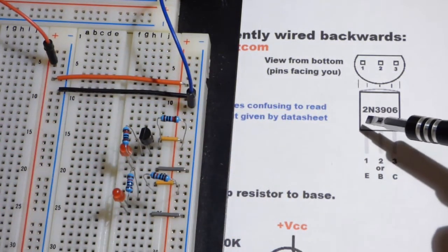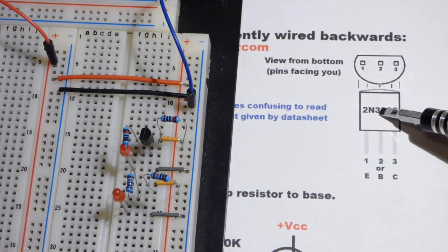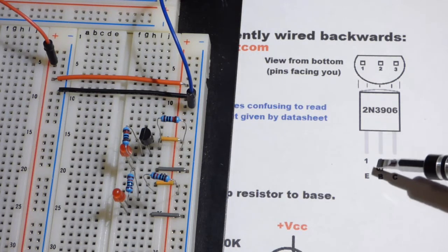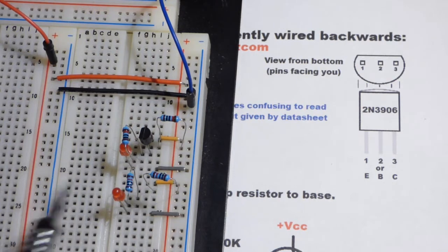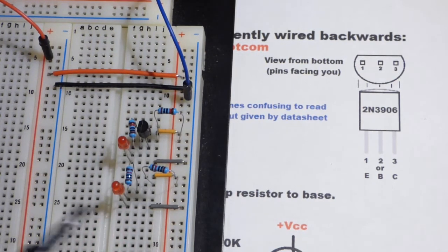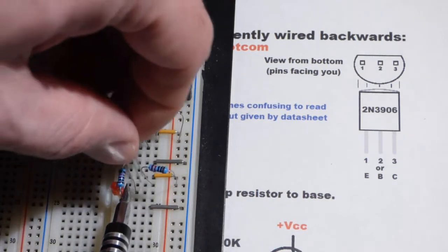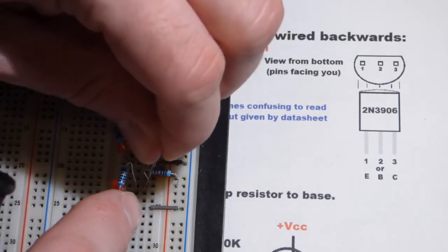And any bipolar junction transistor I've come across that starts with 2N, whether it's NPN or PNP, the emitter is the left pin. And the base is the middle pin and the collector is the right pin. So I'm going to put it in the opposite direction of this one again. And this one, the flat side is facing to the left. And so I will put the flat side to the right. And plug that back in.